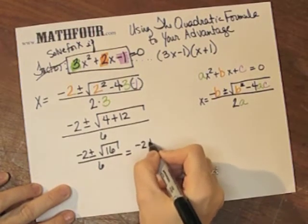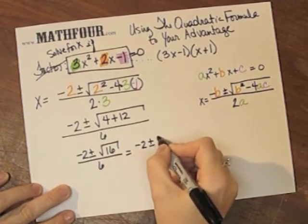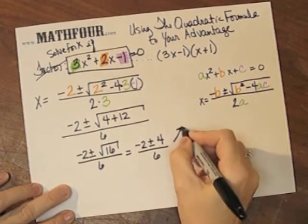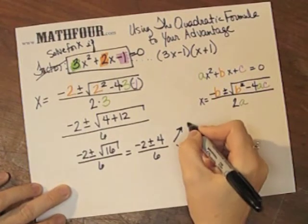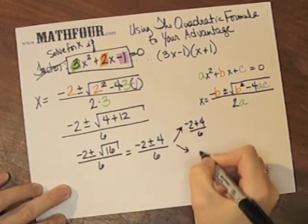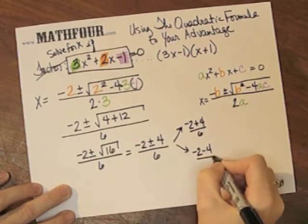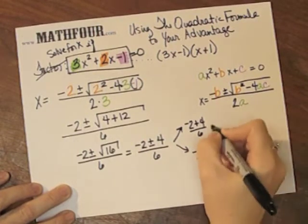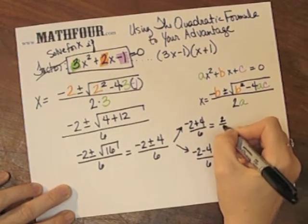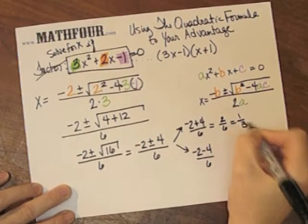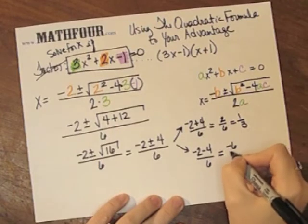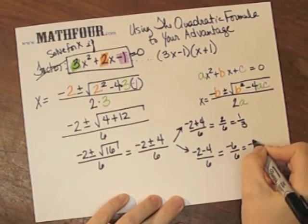So I have negative 2 plus or minus 4, over 6. This splits into two pieces: negative 2 plus 4 over 6, and negative 2 minus 4 over 6. The first one is 2 over 6, which is 1 third. The second is negative 6 over 6, which is negative 1.